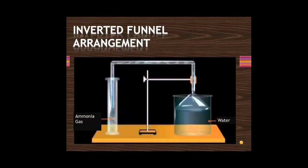As discussed in the HCl topic, the inverted funnel serves two purposes: first, it gives a larger surface area for absorption, and second, it prevents back suction of water into the round bottom flask where ammonia is being prepared.